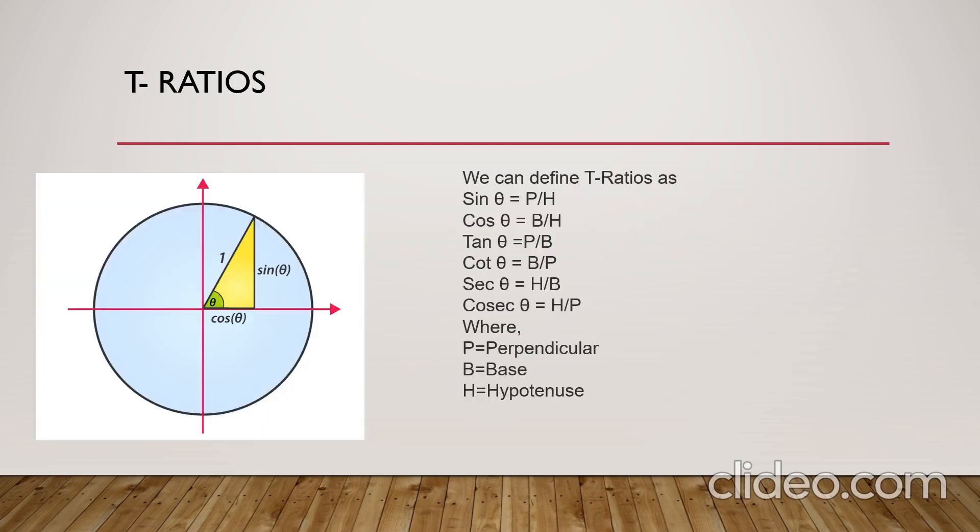You have learned in class 10 about sin, cos, tan, sec, cosec, and cot. In a right-angled triangle, we have hypotenuse, perpendicular, and base. The side opposite to the 90 degree angle is the hypotenuse. You know sin theta equals P upon H, cos theta equals B upon H, tan theta equals P upon B. Cosec is the reciprocal of sin, sec is the reciprocal of cos, and cot is the reciprocal of tan.